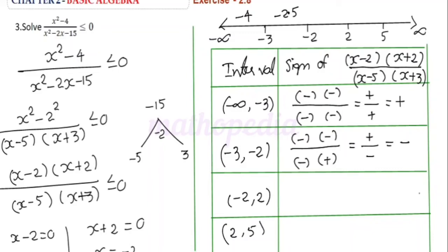For the next interval (-2, 2), consider x = 0. Then (0 - 2) = -2, negative; (0 + 2) = positive; (0 - 5) = -5, negative; (0 + 3) = positive. So this equals (-)( +) / (-)(+) = (-)/(-) = positive.